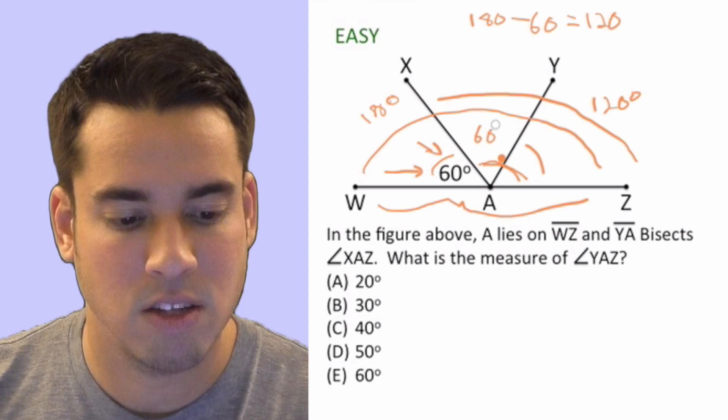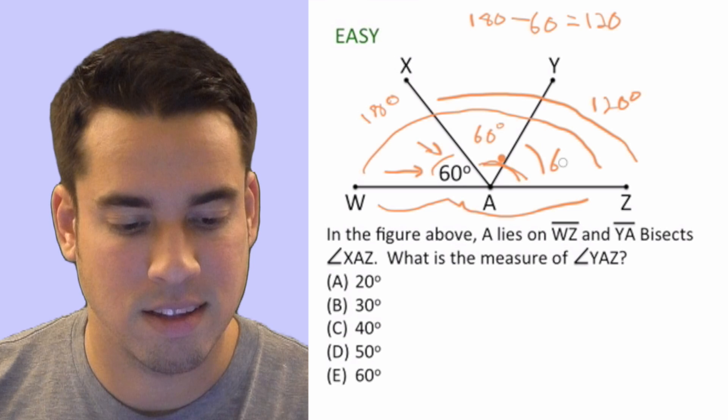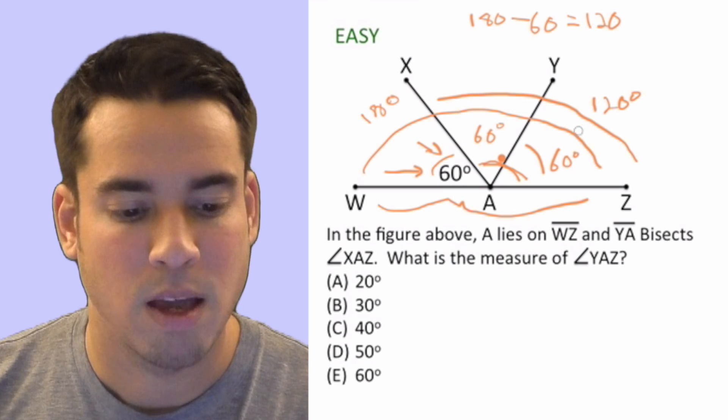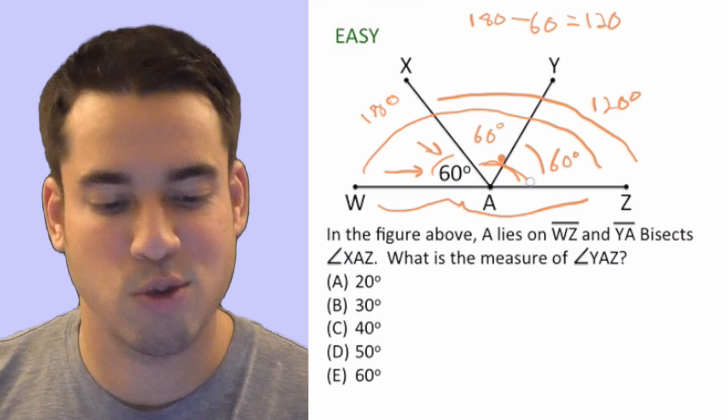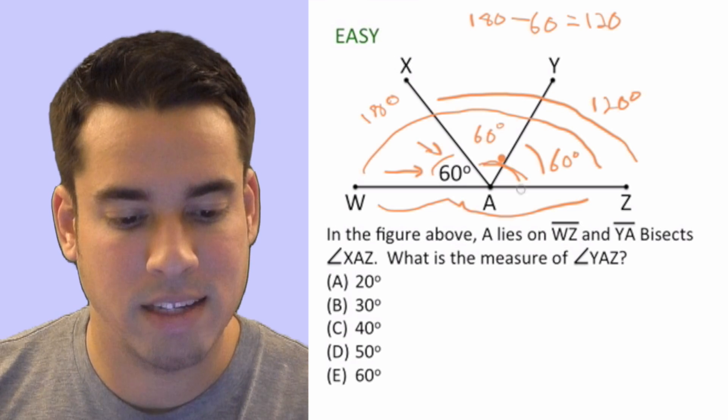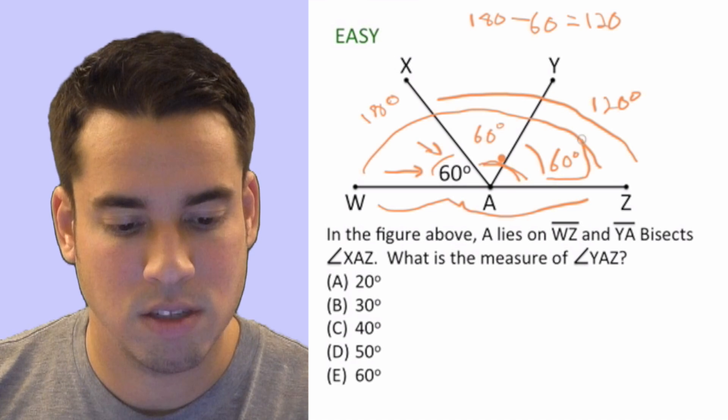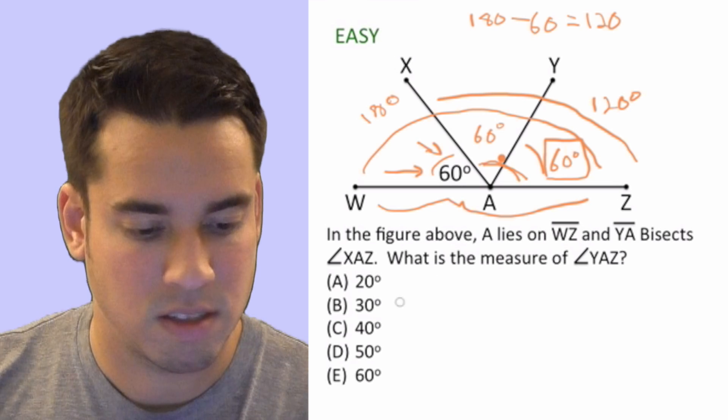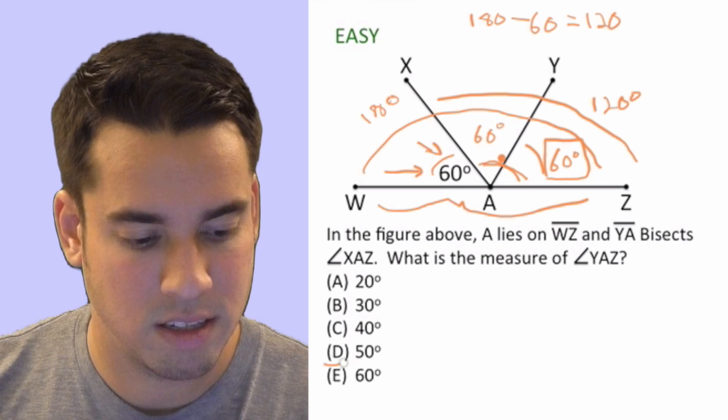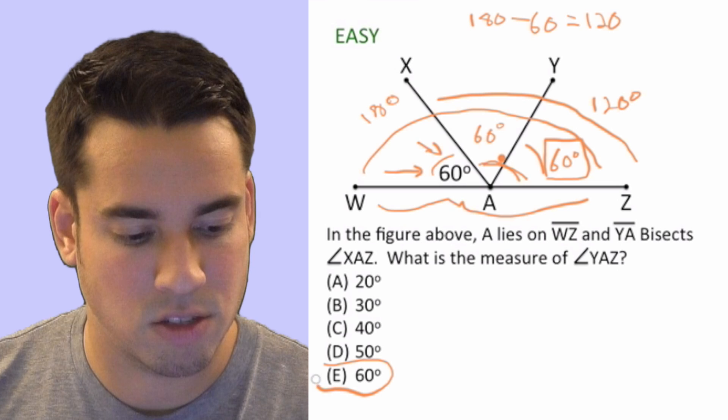Which means this angle is 60 and this angle is 60. And what do we want to know? I know there's lines going all over the place, but we want to know YAZ. So we want to know this guy, and it's 60 degrees. And it is E, final answer, done.